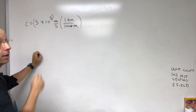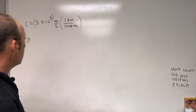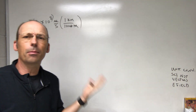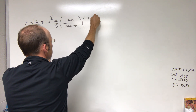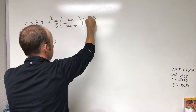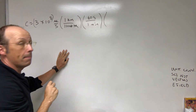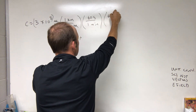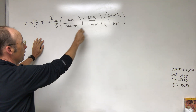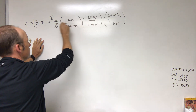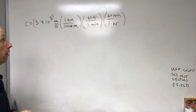Now I need to convert seconds to hours. I'll go through minutes: multiply by 60 seconds over 1 minute — the seconds cancel, giving kilometers per minute. Then multiply by 60 minutes over 1 hour — the minutes cancel — and I get kilometers per hour. Now let's put this into a calculator.